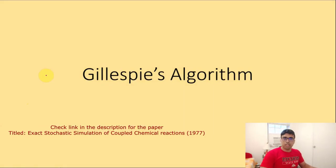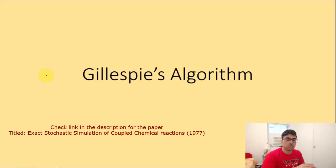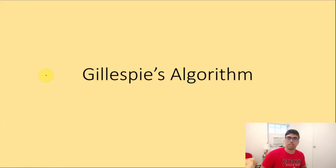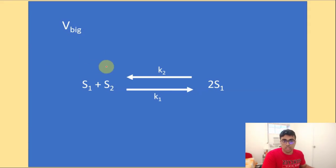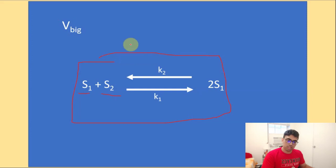In probability theory, Gillespie's algorithm generates statistically correct trajectories — one of the possible solutions of the stochastic system we are studying. This algorithm was made popular in 1977 by Gillespie himself, who was able to simulate chemical and biomolecular reactions in a computationally efficient manner. Let's consider a system composed of two gas-phase molecular species S1 and S2, and we'll use this example throughout the video.